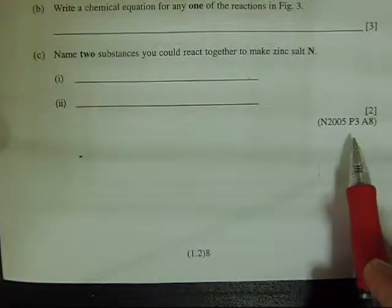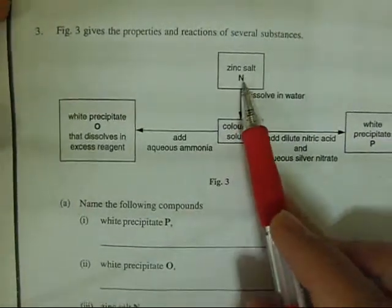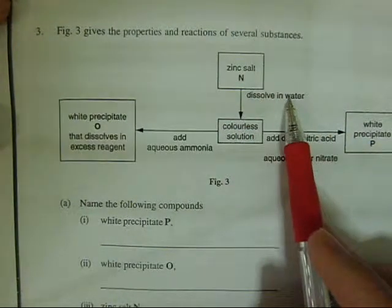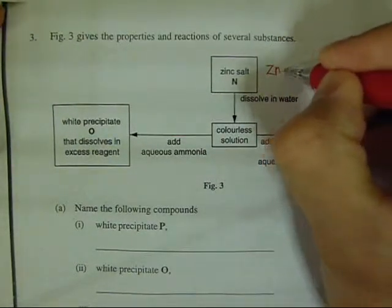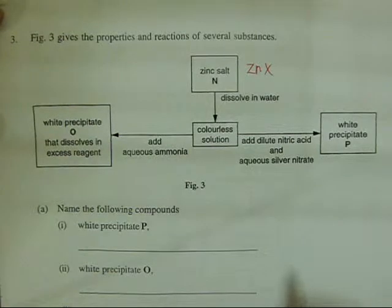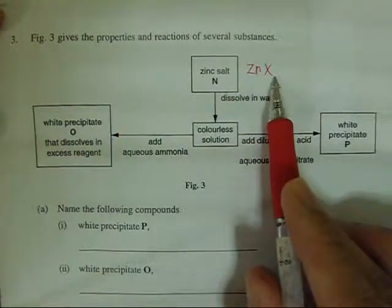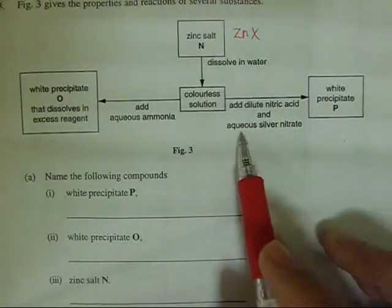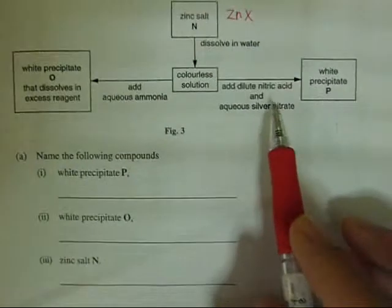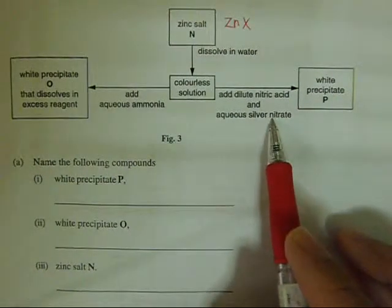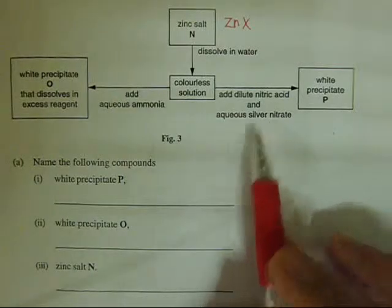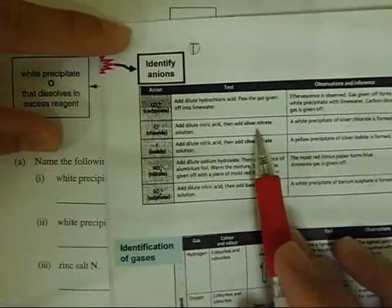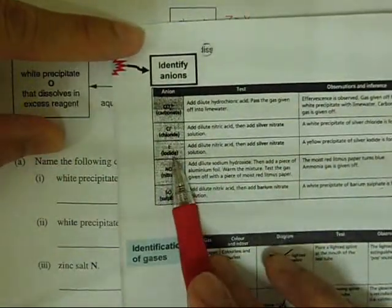2005 paper, question 388. A zinc salt is dissolved in water — we know the positive ion is zinc, but we do not know the negative ion. The result is a colorless solution. We then add dilute nitric acid and aqueous silver nitrate. This is a negative ion test — silver nitrate can test for either the chloride ion or the iodide ion.